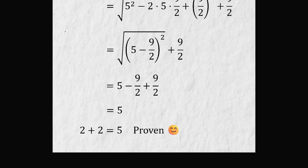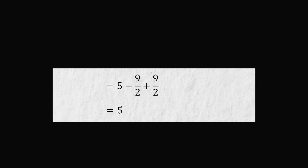So where's the mistake? Let's go through the steps in reverse order, starting easy. Looking at the last two lines: is it true that 5 minus 9 over 2 plus 9 over 2 equals 5? Well, minus 9 over 2 cancels with 9 over 2, so this equals 5. This step is correct.